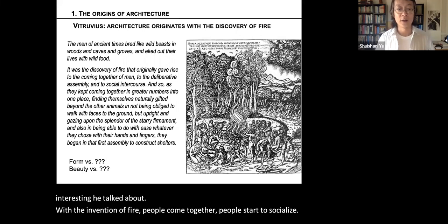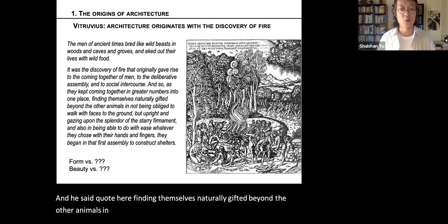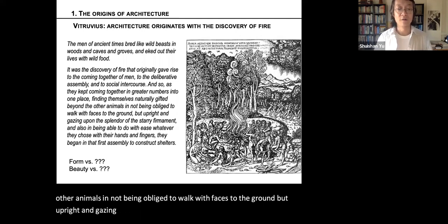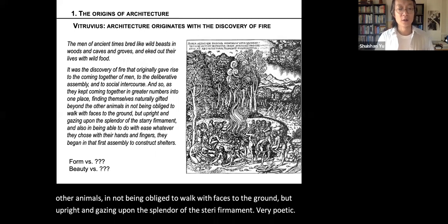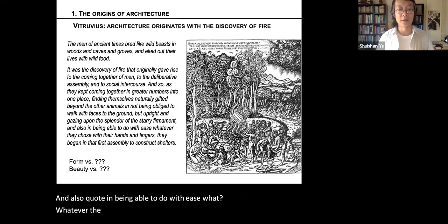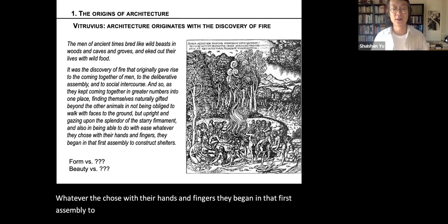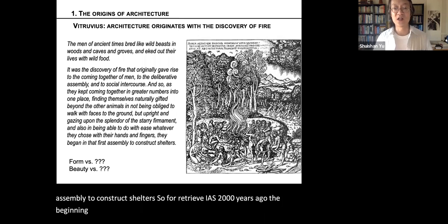Vitruvius wrote, quote: 'Finding themselves naturally gifted beyond the other animals in not being obliged to walk with faces to the ground, but upright and gazing upon the splendor of the starry firmament' — which is very poetic. And also, quote: 'In being able to do with ease whatever they chose with their hands and fingers, they began in that first assembly to construct shelters.' So for Vitruvius, 2,000 years ago, the beginning of architecture is not something physical, but some kind of activity.